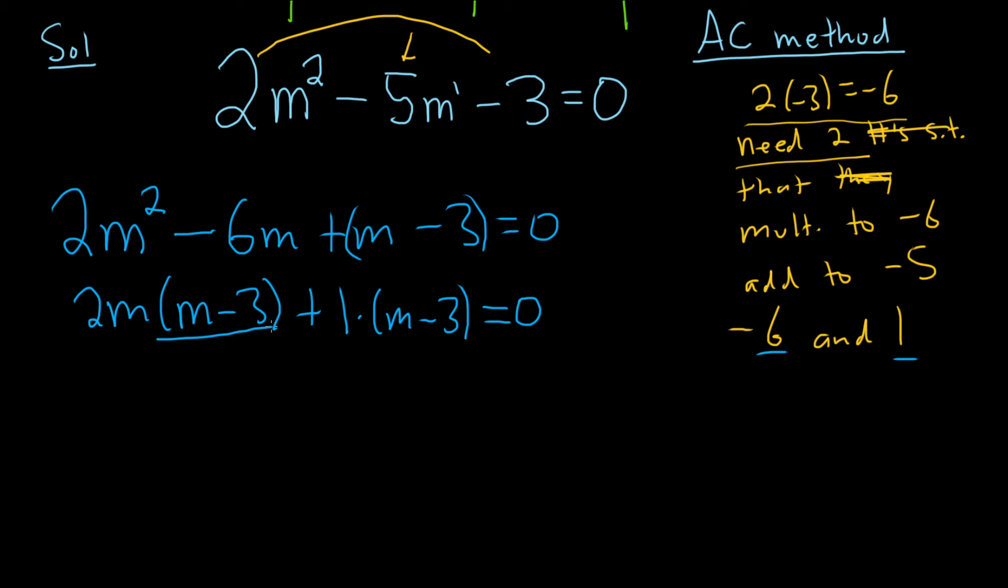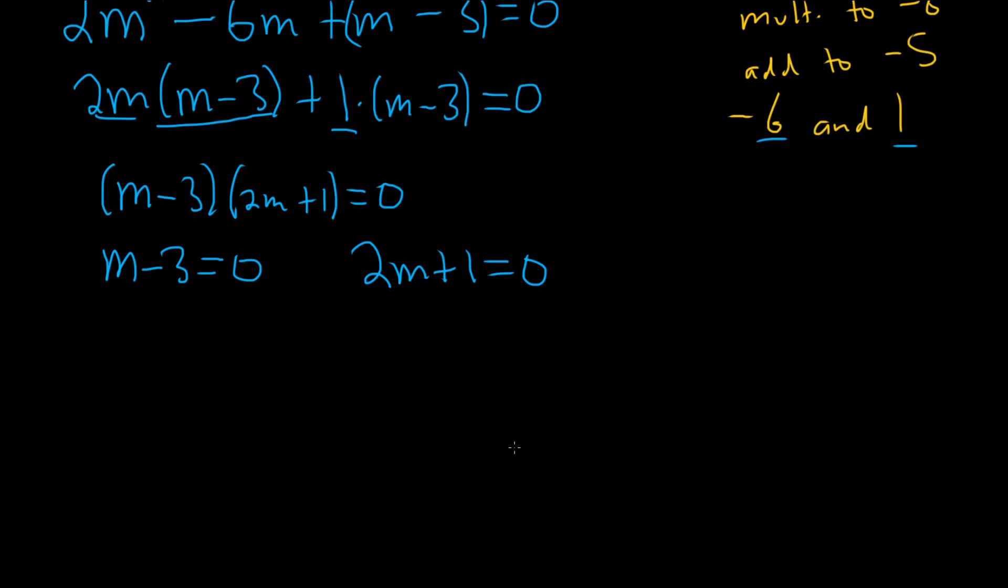So now we can pull out the m minus 3. So I'll put it in the front, m minus 3. And we have 2m plus 1. You have a product equal to 0. So you set each factor equal to 0. So m minus 3 equals 0. And then 2m plus 1 equals 0. So we get m equals 3 in the first case. So m equals 3.